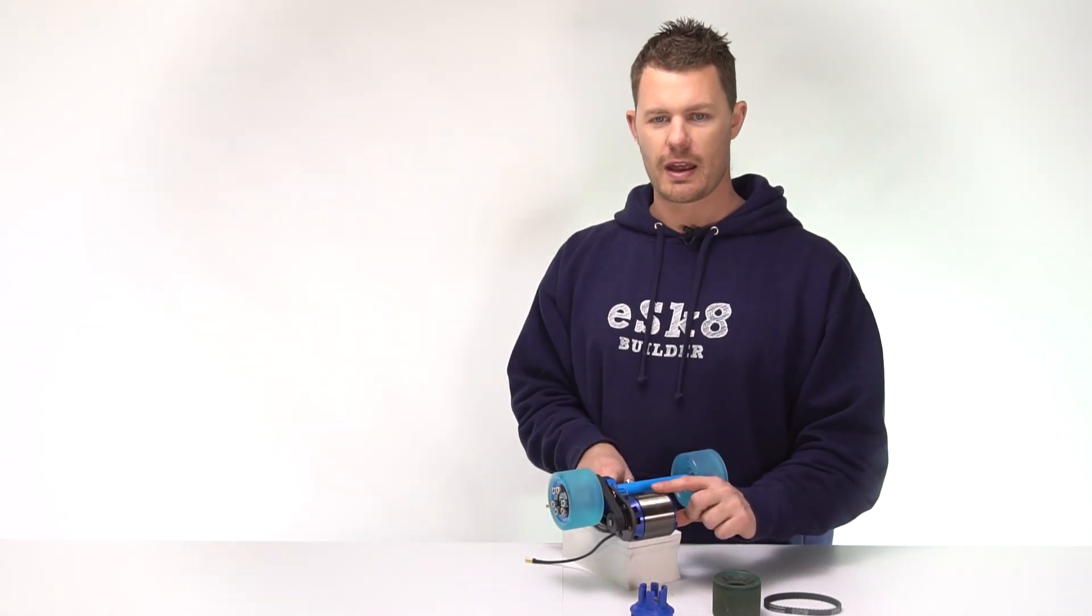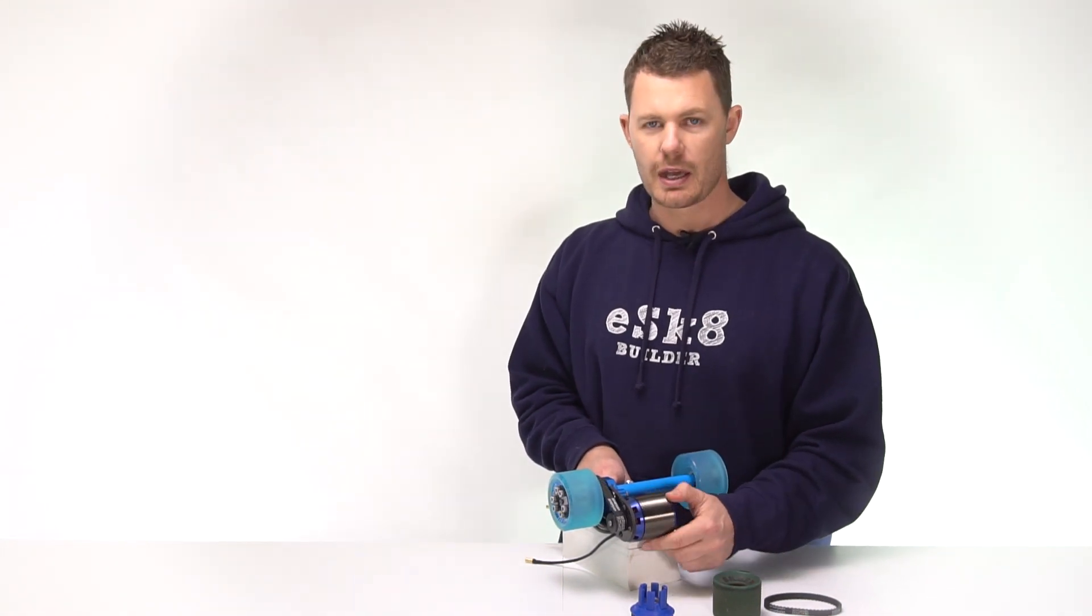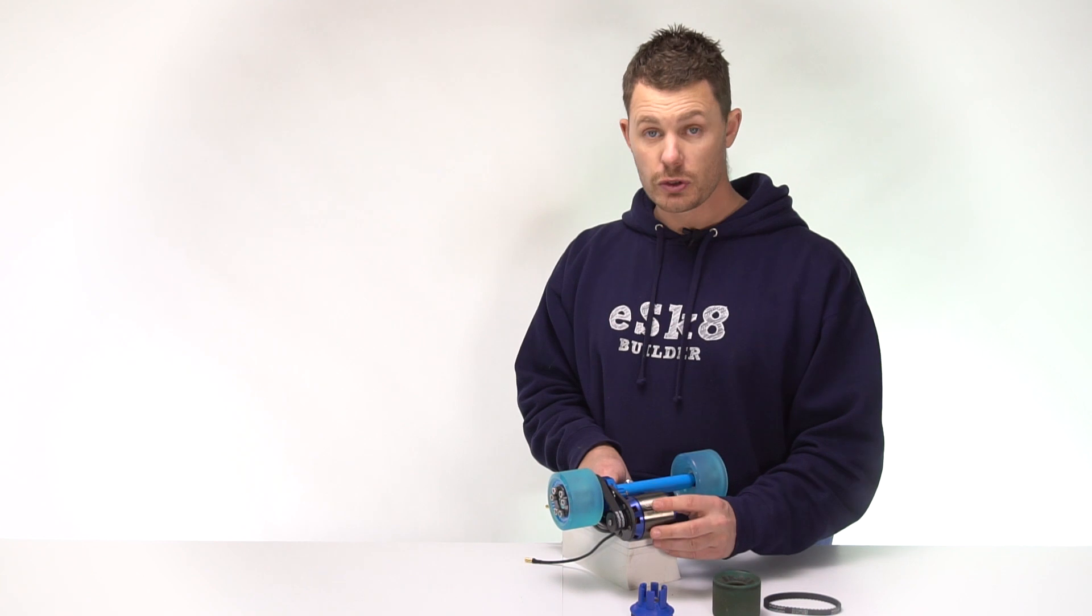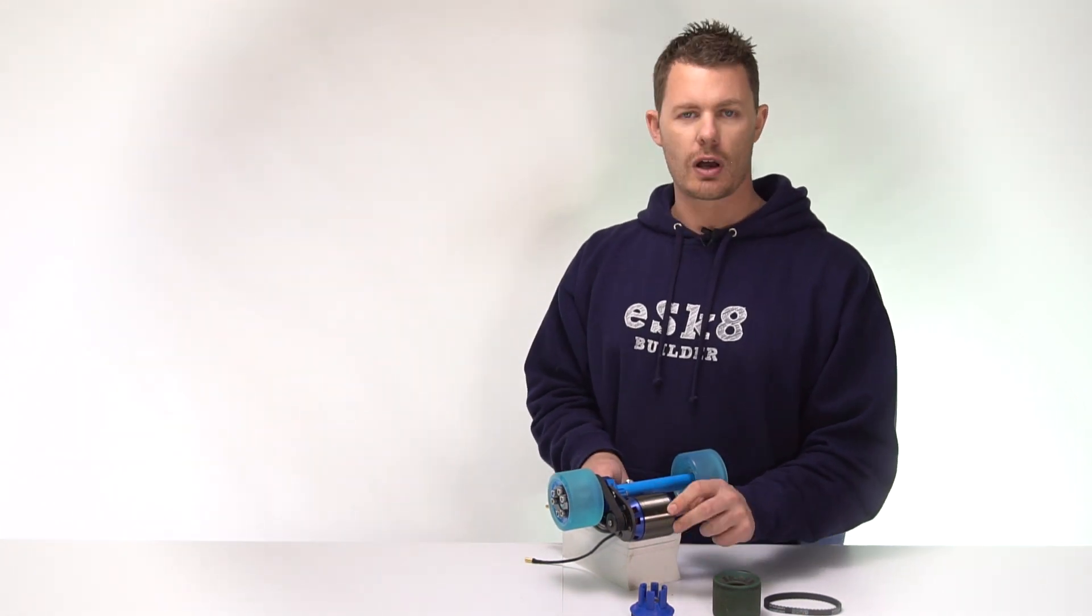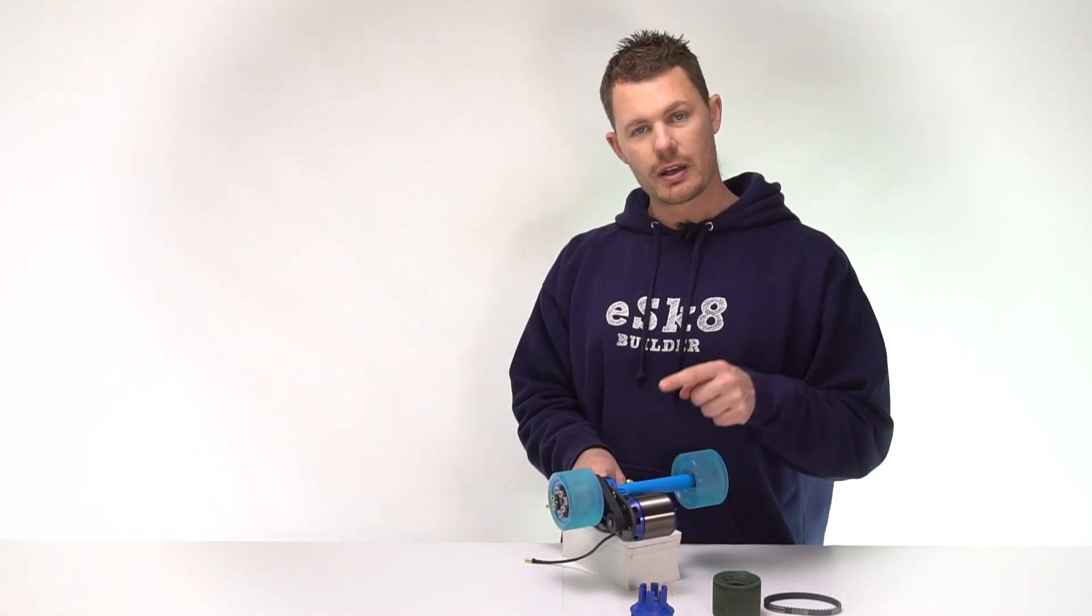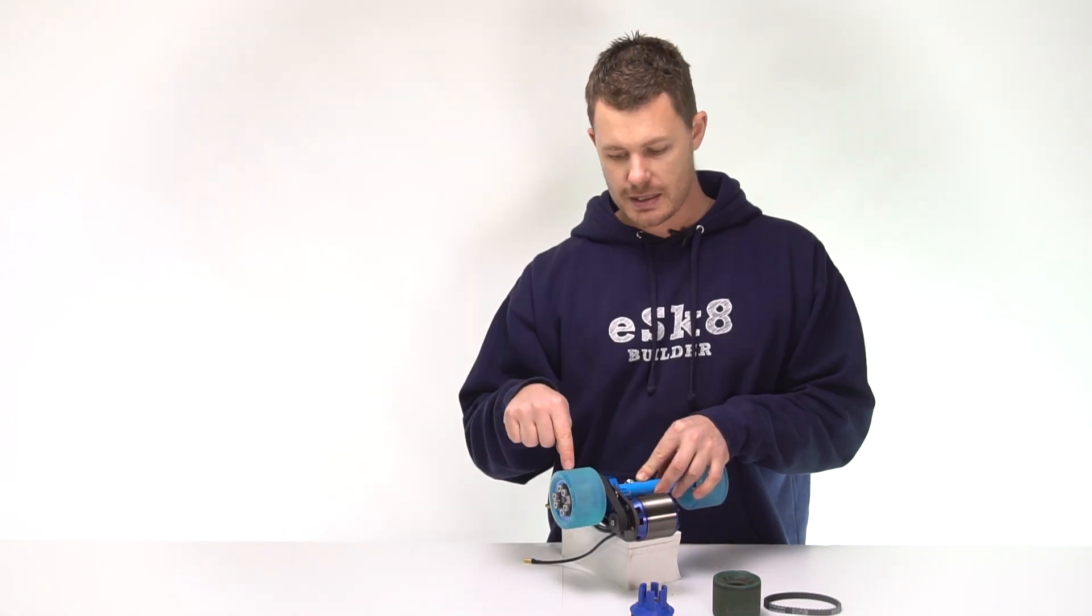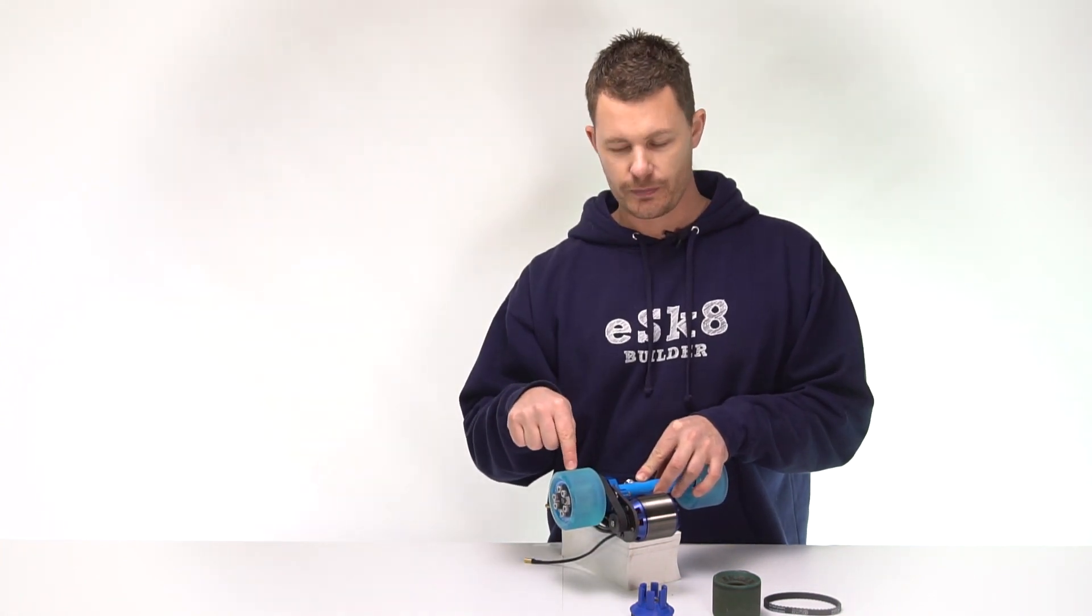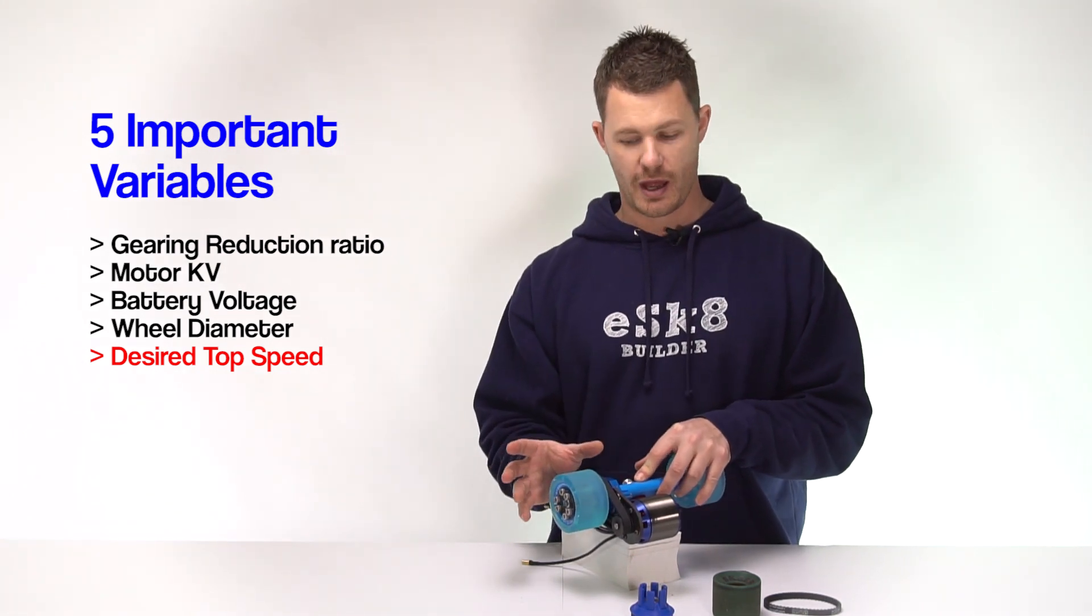Now 190 KV gives us a particular RPM which is suitable for a 36 volt battery. If I was to lower the voltage of that battery this would spin slower. Now as you know the speed that this spins dictates the speed we get at the wheel.